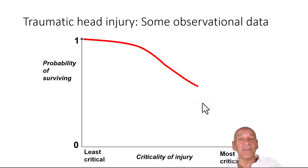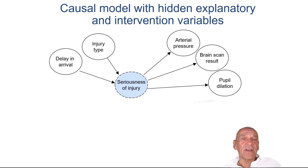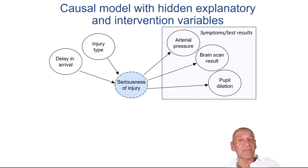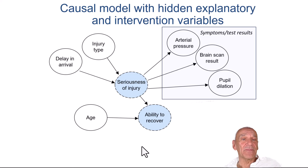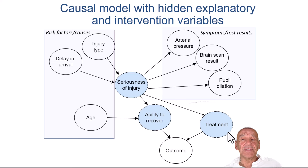In particular, results of such a model appear to be working well in the sense that as the risk factors collectively become more critical, the predicted probability of survival decreases. But in the most critical cases, you might see an uptick in survival probability. Why should the most critical be more likely to survive than those who are slightly less critical? In a proper causal model, things like delay in arrival and injury type impact on the seriousness of the injury. Arterial pressure, brain scarring zone, and pupil dilation are simply symptoms of seriousness. The ability to recover is influenced by both seriousness and age. Most crucially, the outcome is influenced not just by ability to recover, but by whether the patient receives urgent treatment. Those patients especially at risk are already known to the surgeons and likely to get urgent treatment — that's why you get anomalies in the regression model results.